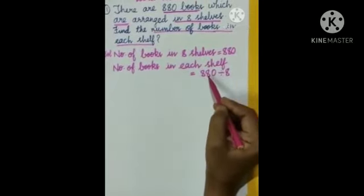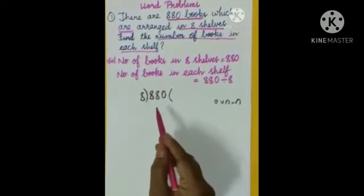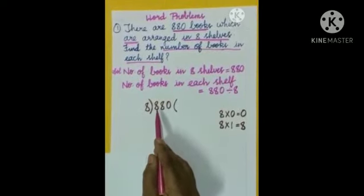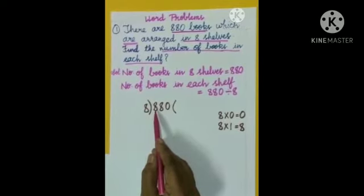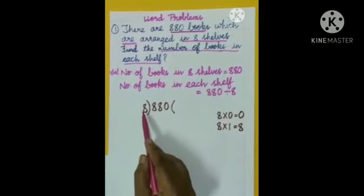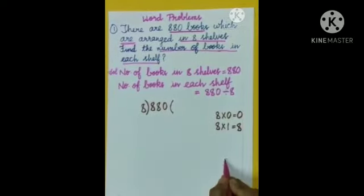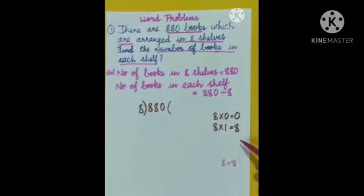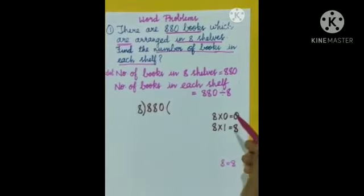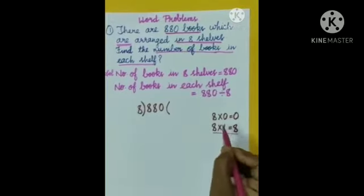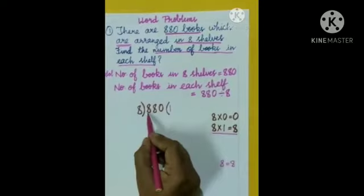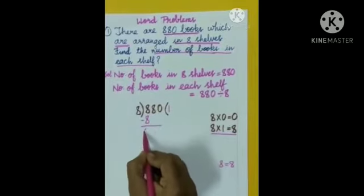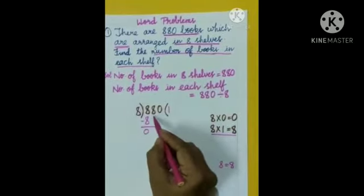Now let us divide 880 by 8. Compare the highest place with the divisor. The highest place is the hundreds place. The digit in the hundreds place is 8. Compare 8 with the divisor 8 — 8 is equal to 8. From the table of 8, 8 ones are 8. We write 1 in the quotient and 8 under the hundreds place, then subtract: 8 minus 8 equals 0. Now bring down the next digit, which is 8.